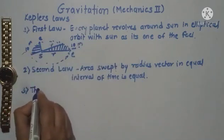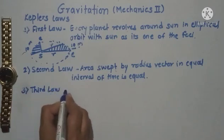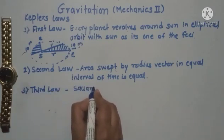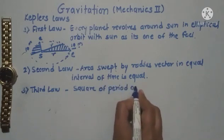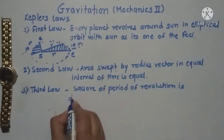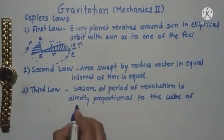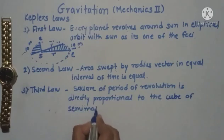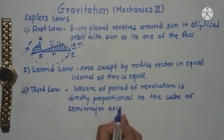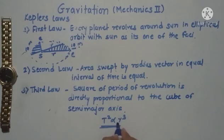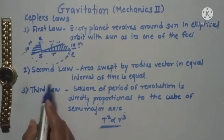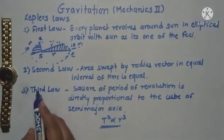The third law says that the square of the period of revolution is directly proportional to the cube of the semi-major axis — that is, T² is proportional to R³. Here T is the period of revolution. This is Kepler's third law, and these three Kepler's laws are very useful in understanding planetary motion.